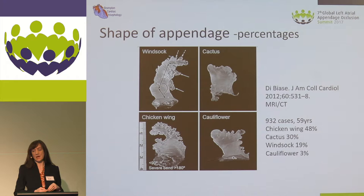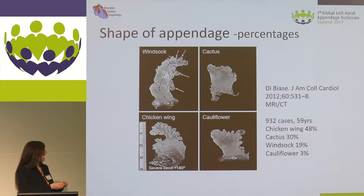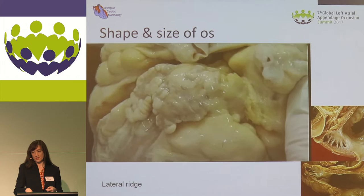If we look at a clinical paper which looked at over 900 cases, the most common morphology — even though we described four different types — is the chicken wing morphology. The rest of them make up about 50% of cases. And it's the non-chicken wing types that are most associated with emboli formation. You can see how we've got just a sort of blind-ending, stump-like appendage — we don't have that curvature seen in the chicken wing, so there's slowing down of all the blood flow there.